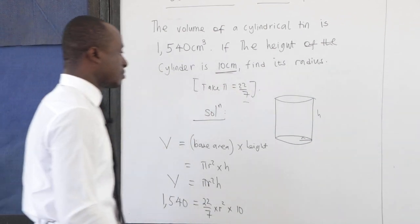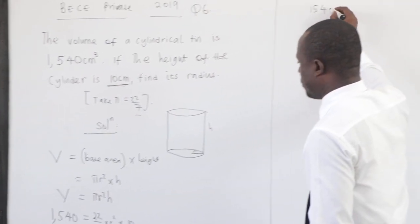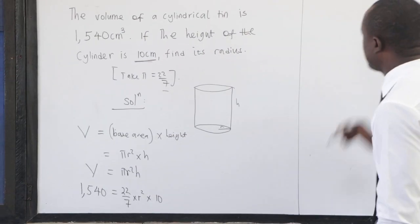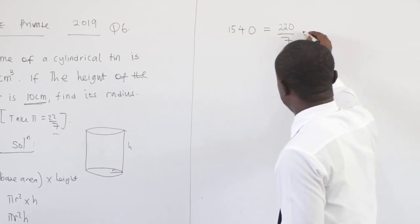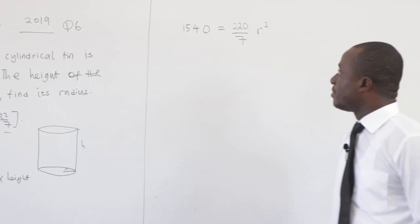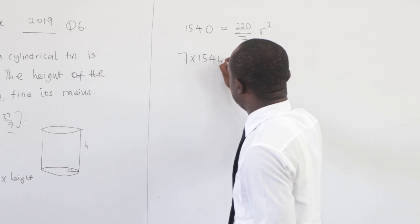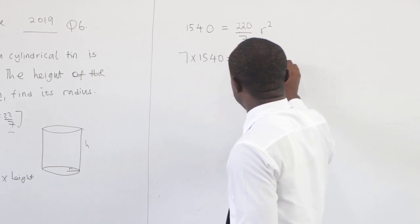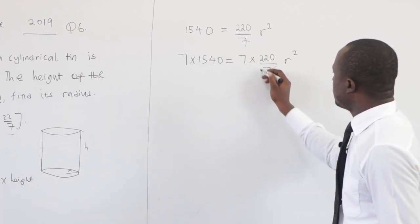Clearly from here you have 1,540 = 22×10, that is 220 over 7, times r². Now what is the LCM? The LCM is 7. So you can say 7×1,540 = 7×220/7 r². LCM is 7. Clearly this 7 is canceling that 7.